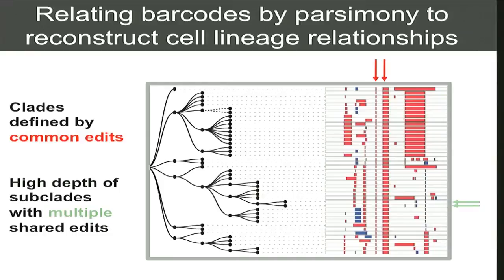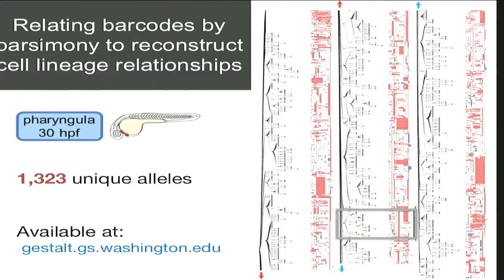This is one portion of the overall tree. If we zoom out, we have these Sulston-like trees where we have over a thousand alleles that we're able to pull together into a single tree. This was from a 30-hour embryo, and at most we're getting probably eight or nine levels in terms of the depth of the tree.